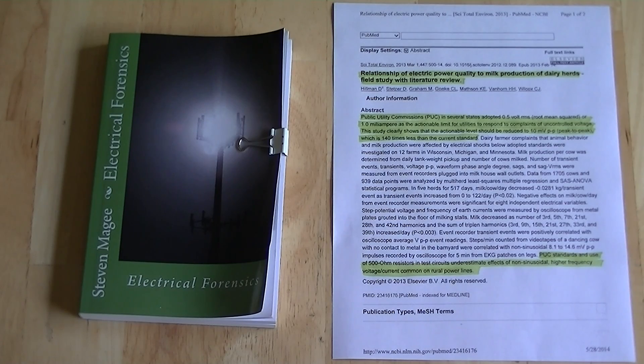The abstract states, public utility commissions in several states adopted a 0.5 volt RMS root mean squared, or 1 milliampere, as the actionable limit for utilities to respond to complaints of uncontrolled voltage.